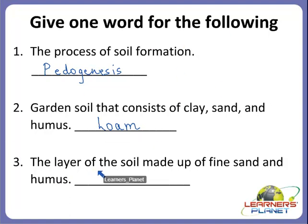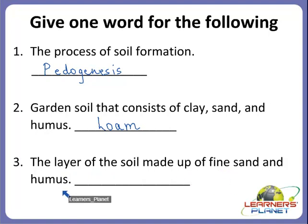Now the next one: the layer of the soil made up of fine sand and humus — what is it called? We just discussed this. Yes, the uppermost layer of the soil made up of fine sand and humus is called topsoil. T-O-P-S-O-I-L. Topsoil is very fertile.